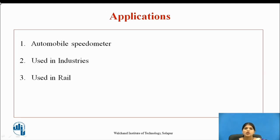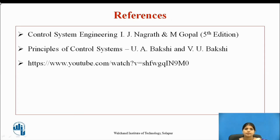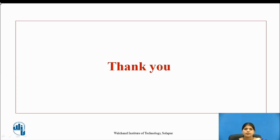The applications of tachogenerator include measuring rotating speed of a disc or shaft, which is its main application. It is also used in automobile speedometers, and in industries and rail for controlling motor and speed respectively. These are some references for this video lecture. Thank you.